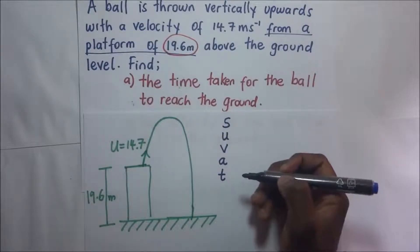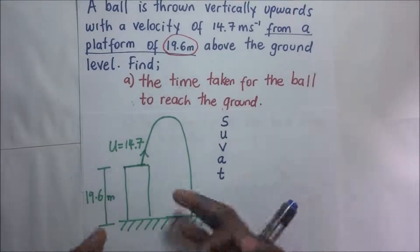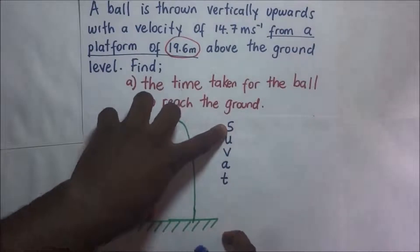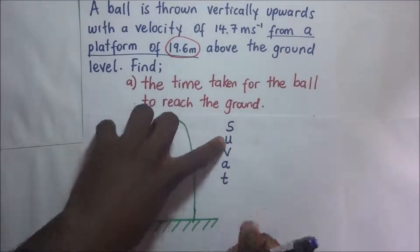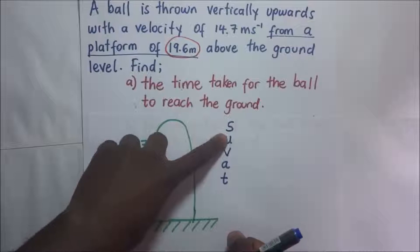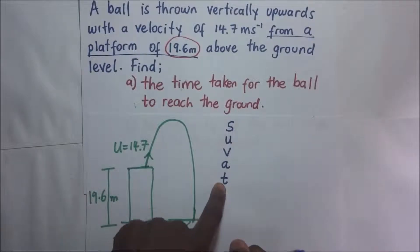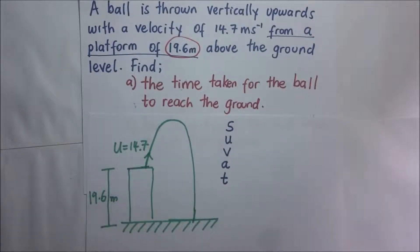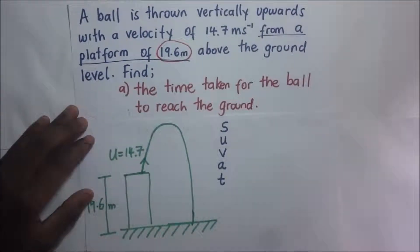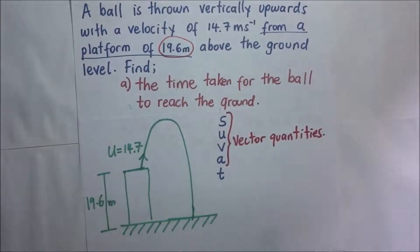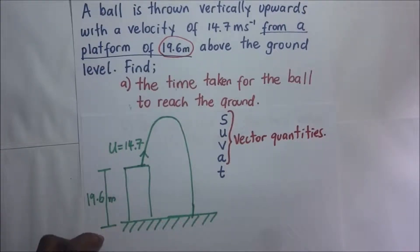When dealing with motion under the influence of gravity, displacement is a vector quantity. Initial and final velocity are also vector quantities. Acceleration is a vector quantity. Only time is a scalar quantity. Because we are dealing with vector quantities, we are supposed to take into consideration their direction as well. A vector quantity has both magnitude and direction.